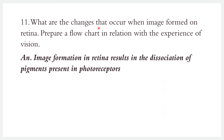What are the changes that occur when an image is formed on the retina? Prepare a flowchart in relation to the experience of vision. When an image forms on the retina, photo receptors are activated, pigments like rhodopsin dissociate into retinal and opsin, and photopsin also dissociates. Then the signal goes to the brain.